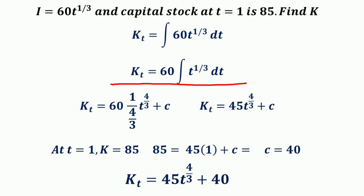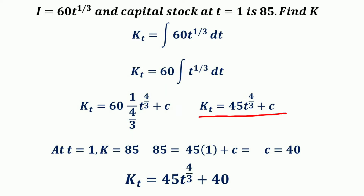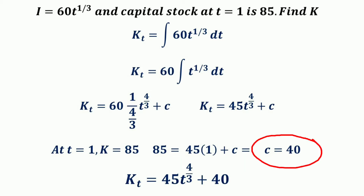So we can write 60 times the integral of t^(1/3) dt, which equals 60 times t^(4/3) divided by (4/3), plus C, which simplifies to 45t^(4/3) + C. At t = 1, K = 85, so substituting these values: 85 = 45(1)^(4/3) + C, giving 85 − 45 = C, so C = 40.